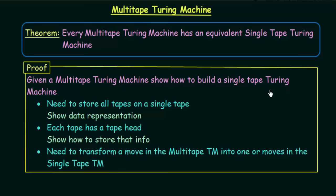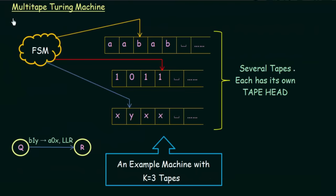Let's take an example and see how we can do this. Here we have an example of a multi-tape Turing machine with three tapes, and each of these tapes has its individual tape head. This is a Turing machine with K equal to three tapes, where K represents the number of tapes.